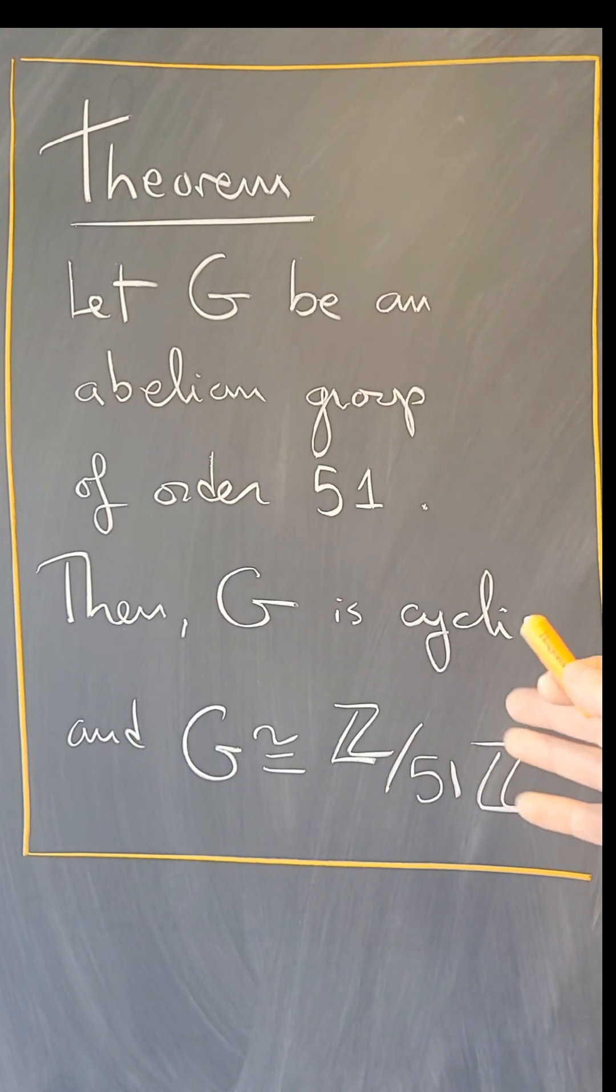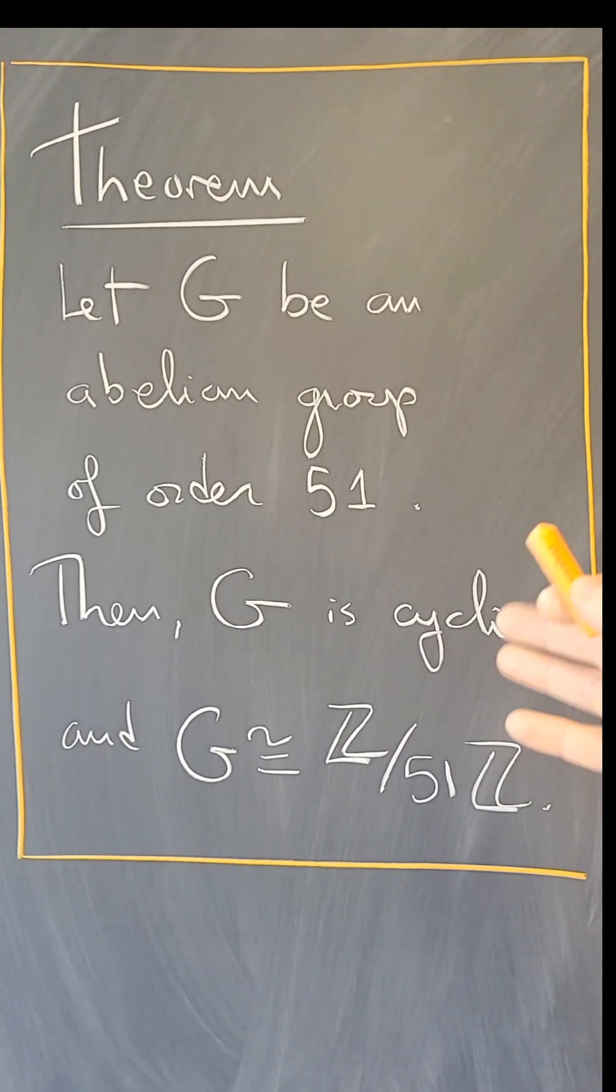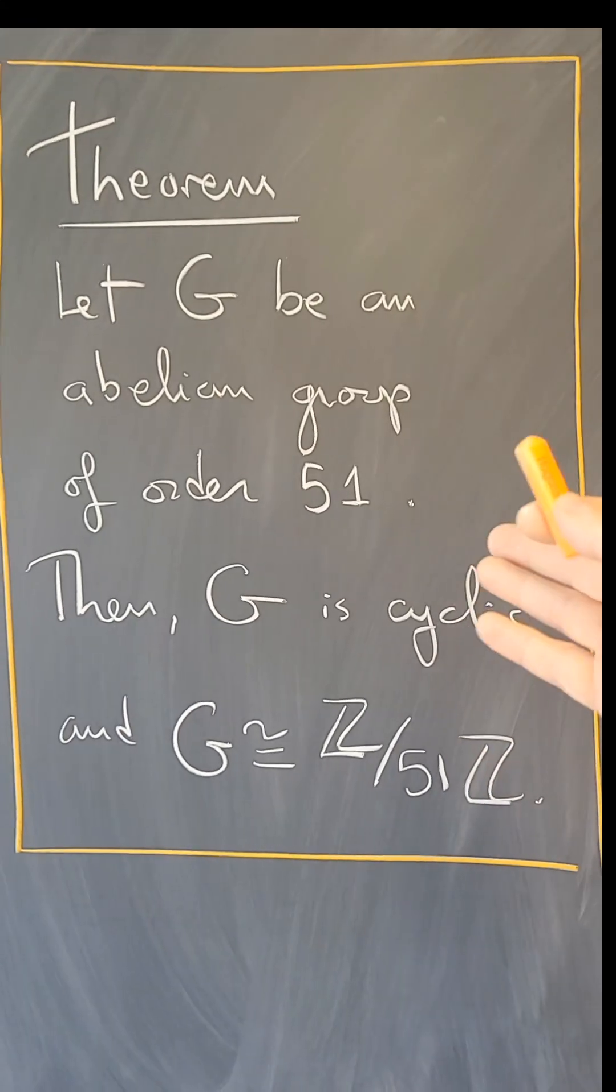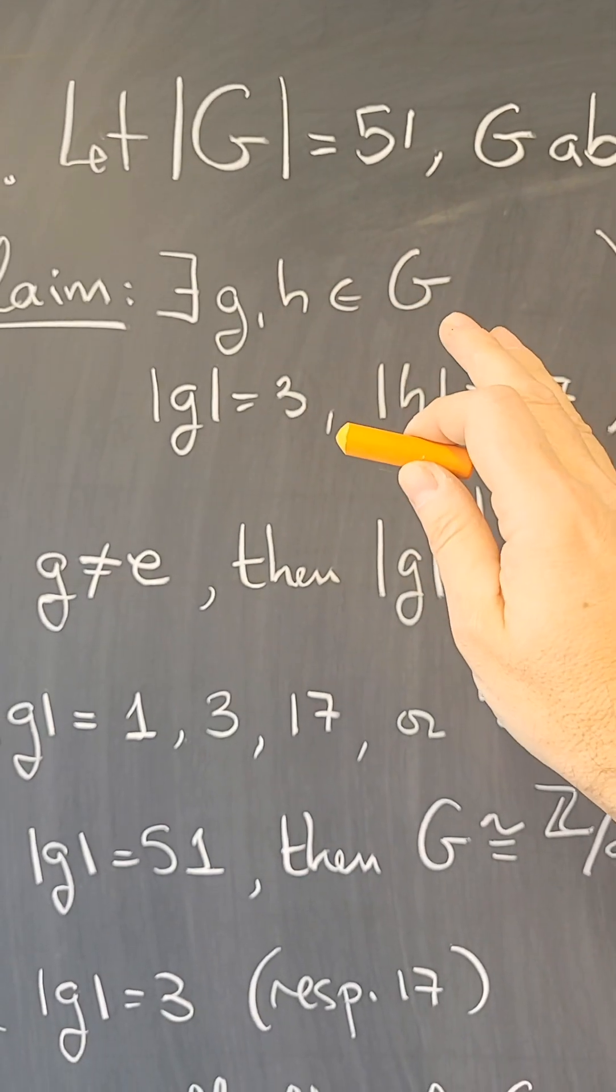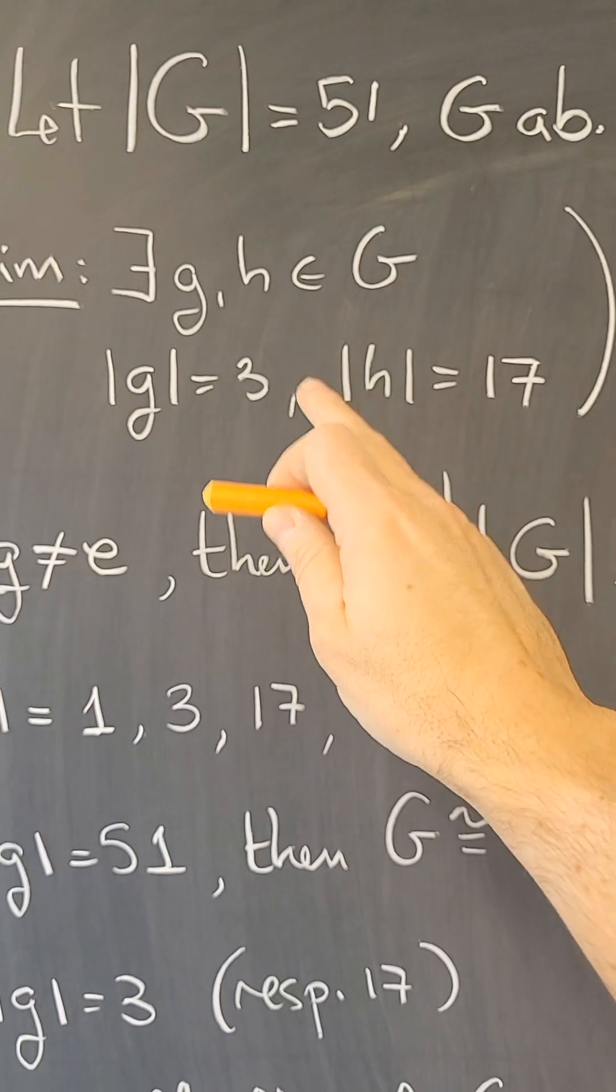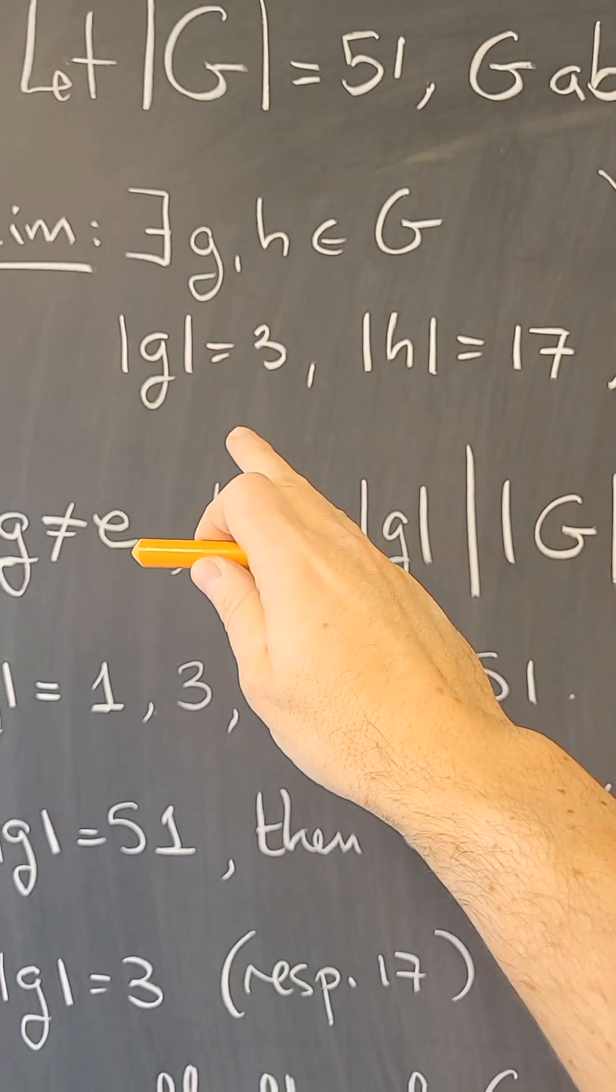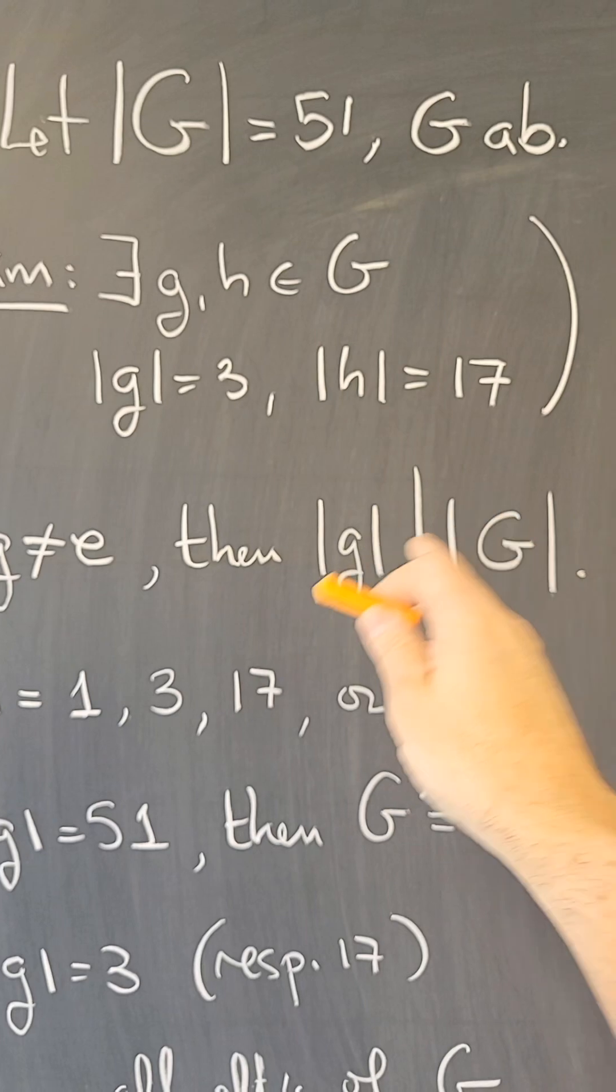Now this theorem will follow from the classification of finite abelian groups, but let's prove it here directly. So let G be such a group, an abelian group of order 51. The strategy is going to be to show that there is an element of order 3 and an element of order 17, and out of those two I'm going to build an element of order 51 which will generate the entire group.